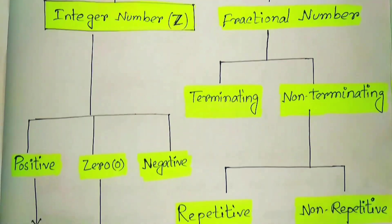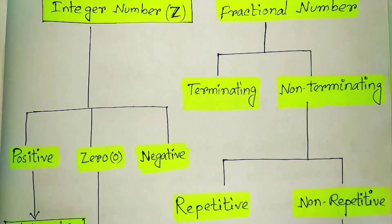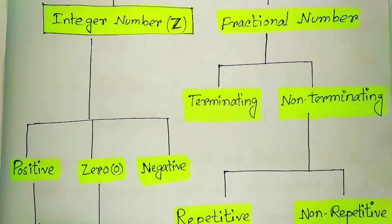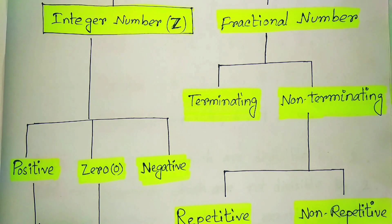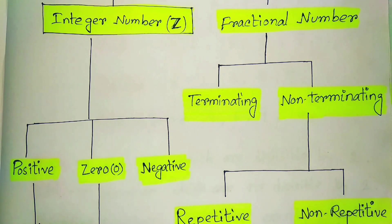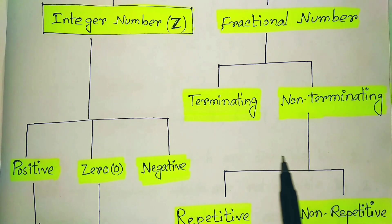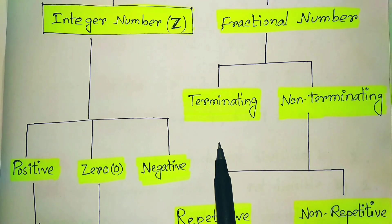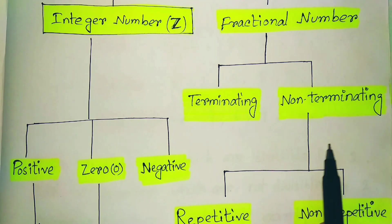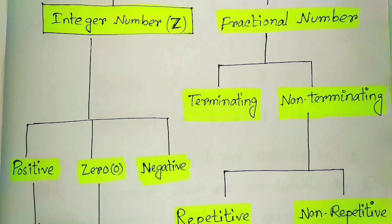Integer number and fractional number can also be divided into sub-parts. Integer number can be subdivided into positive integer, zero, and negative integer. Fractional number can be divided into terminating and non-terminating. We will first emphasize on the integer number.